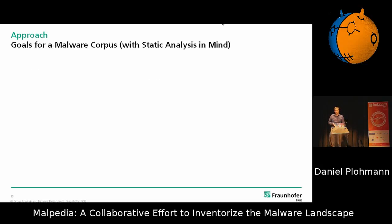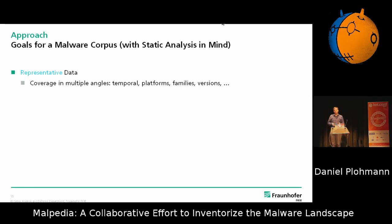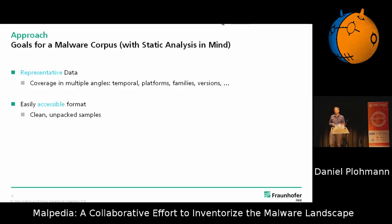Some of the major goals you might have in mind: you want representative data — pretty obvious because you want coverage in multiple angles. It has to be temporal in a good sense, so you can do historical analysis on malware. It doesn't make sense to limit to a platform, and if you want to do analysis on the evolution of families, you need different versions as well. The second design goal was basically to have everything in an accessible format — easy to work with. For me it was of utmost importance to have unpacked samples, because just putting labels on packed samples doesn't really help.